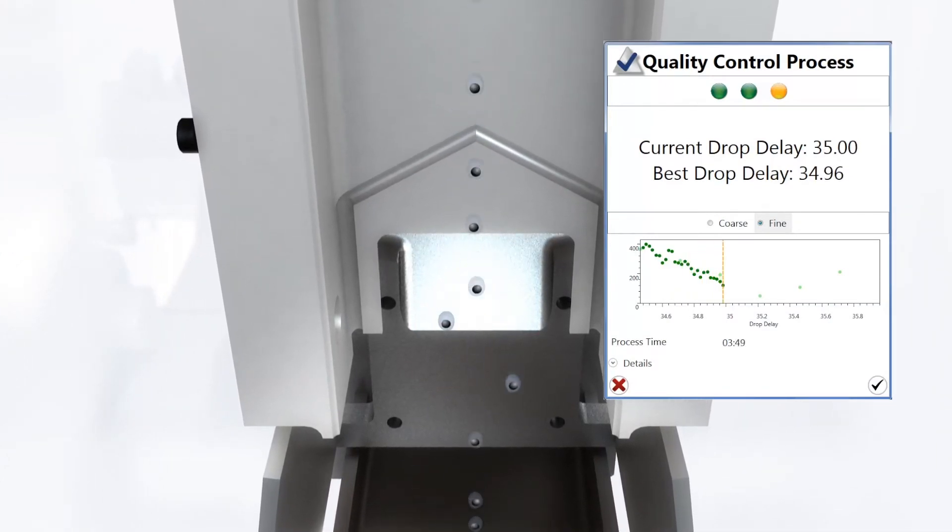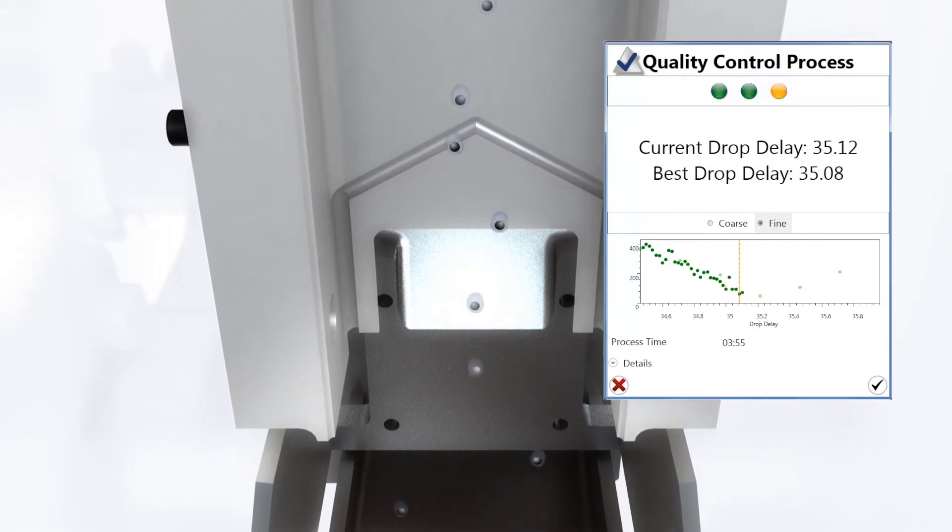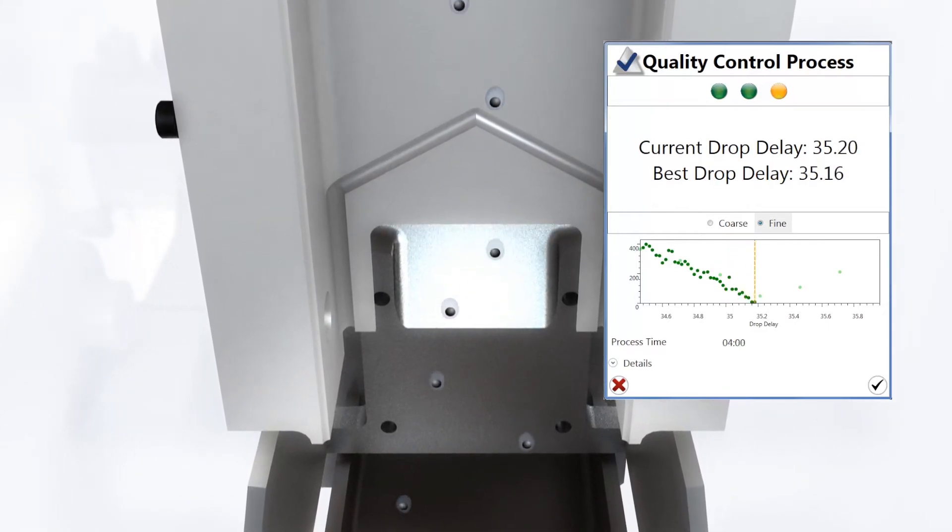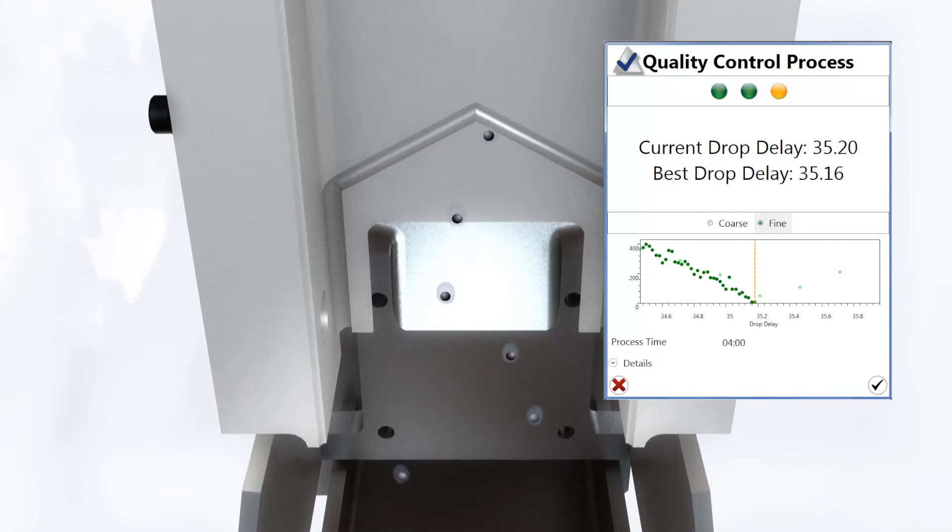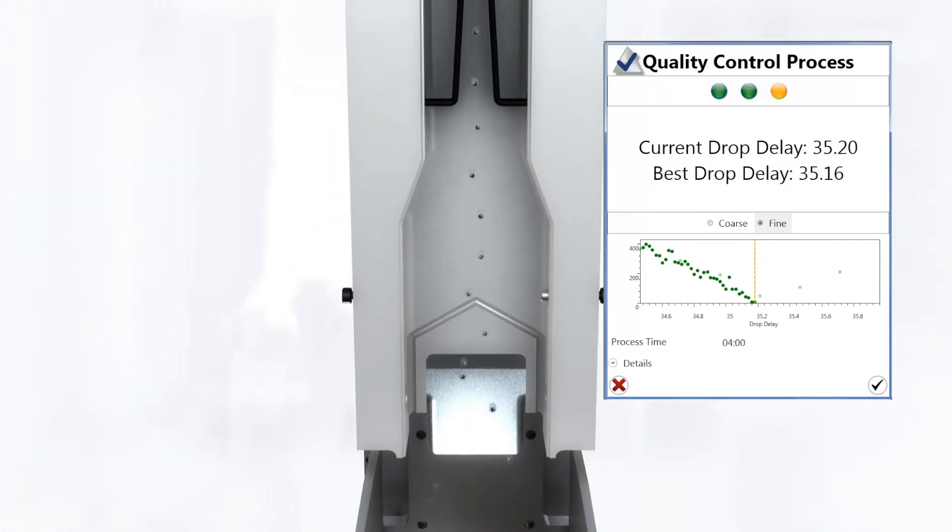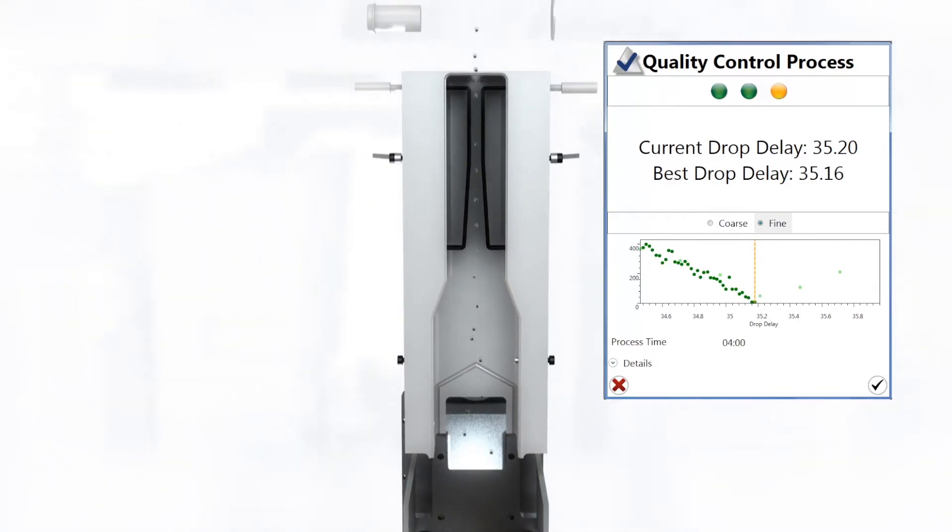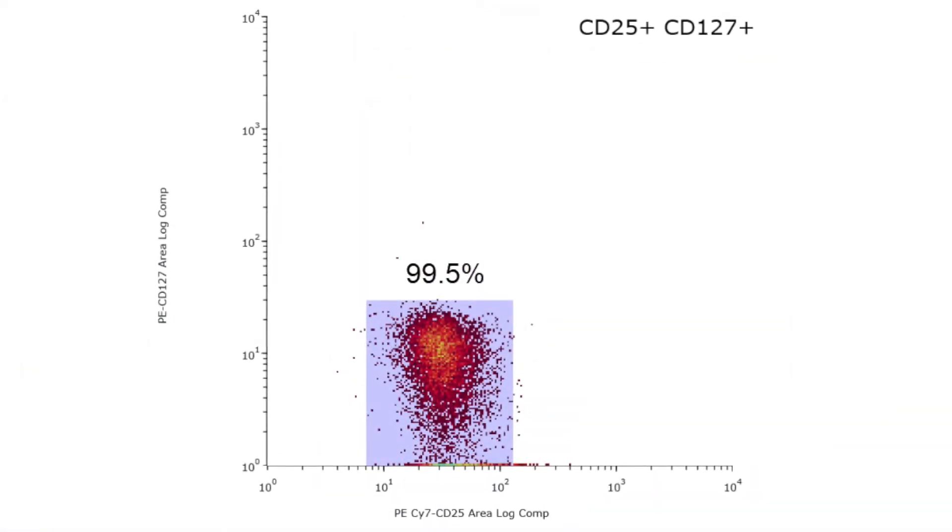ProDrop technology automatically fine-tunes the drop delay until QC beads are no longer detected within the waste stream, confirming that charged droplets are being sorted accurately. ProDrop and jet-in-air means you get the most pure, viable cells out of your precious samples.